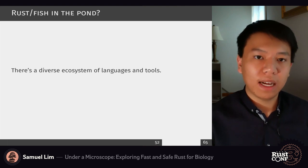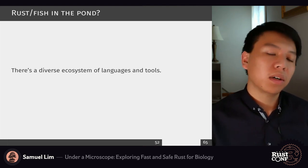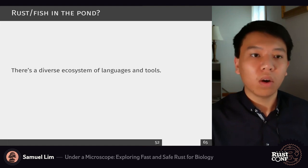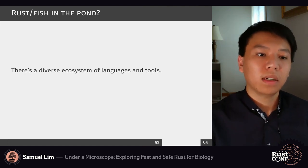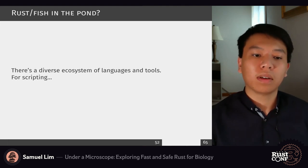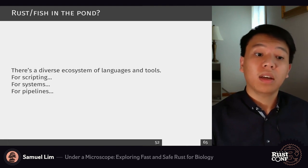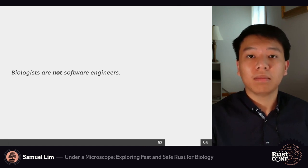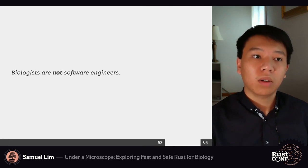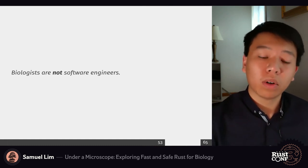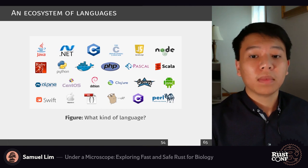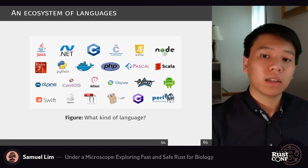The data we process, no matter how fast we parse, needs to go somewhere — it needs to be analyzed further. Sometimes Rust is not the only answer. There's a diverse ecosystem of languages and tools out there, whether for scripting, systems, or pipelines. Biologists are not software engineers, and we certainly don't want to rewrite the world in Rust. The question of what language to use is less about what to stick to, and more about what we can connect and interoperate.